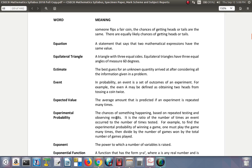Experimental probability: the chance of something happening based on repeated testing and observing results. It is the ratio of the number of times an event occurred to the number of times tested. For example, to find the experimental probability of winning a game, one must play the game many times. Then, divide the number of games won by the number of games played.